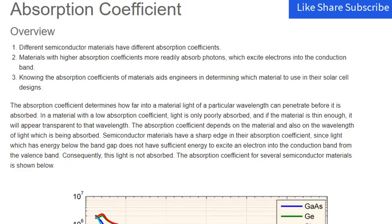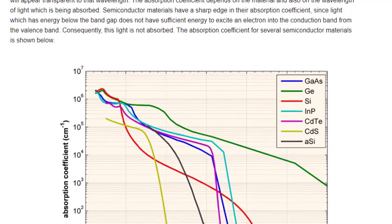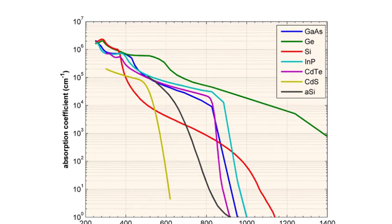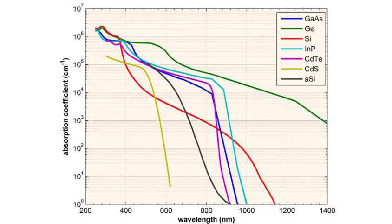The absorption coefficient determines how far into a material light of a particular wavelength can penetrate before it is absorbed. In a material with a low absorption coefficient, light is only poorly absorbed, and if the material is thin enough, it will appear transparent to that wavelength. The absorption coefficient depends on the material and also on the wavelength of light which is being absorbed.